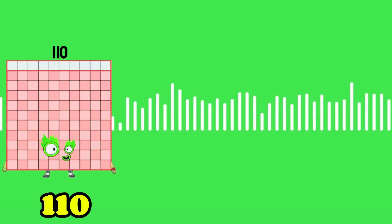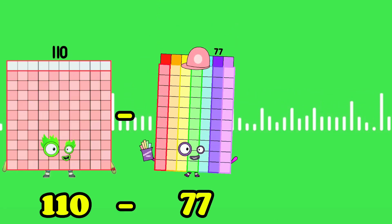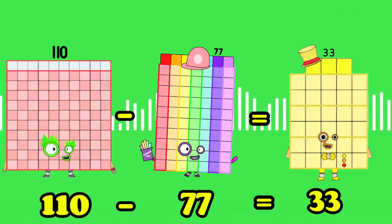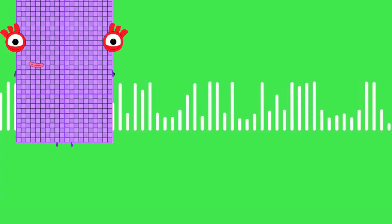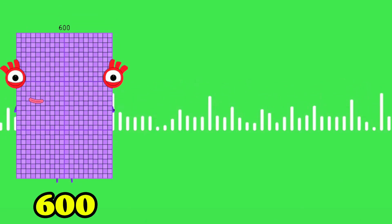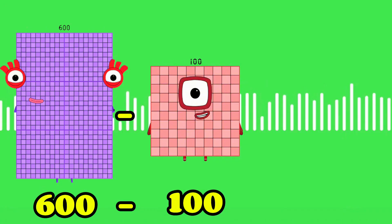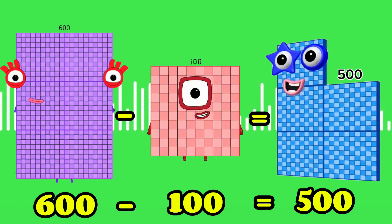Next, 110 minus 77 equals 33. 600 minus 100 equals 500.